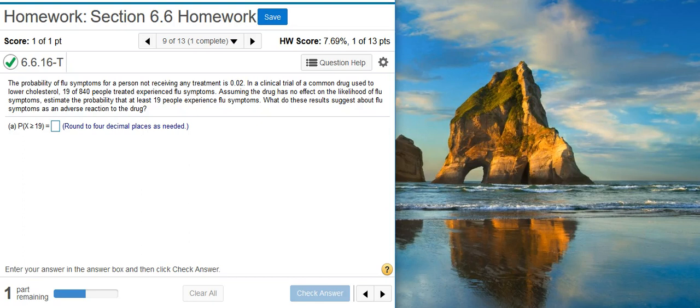Here's our problem statement. The probability of flu symptoms for a person not receiving any treatment is 2%. In a clinical trial of a common drug used to lower cholesterol, 19 of 840 people treated experienced flu symptoms. Assuming the drug has no effect on the likelihood of flu symptoms, estimate the probability that at least 19 people experience flu symptoms. What do these results suggest about flu symptoms as an adverse reaction to the drug?